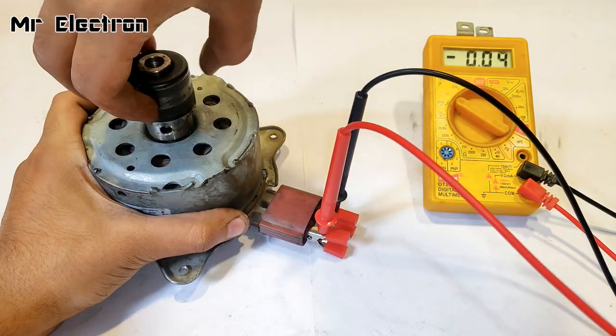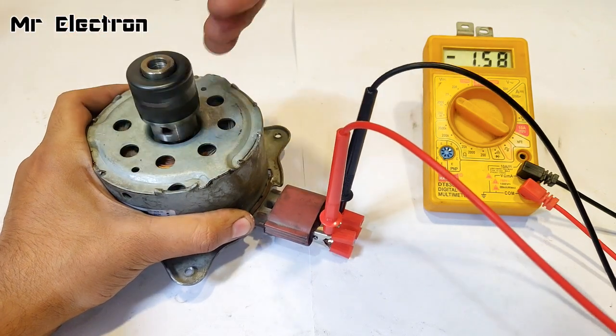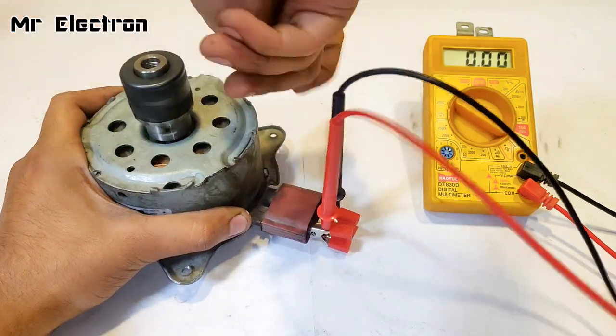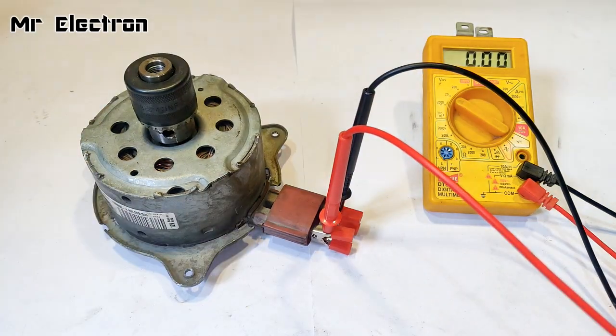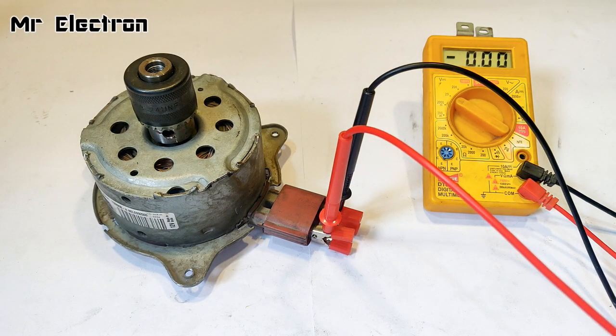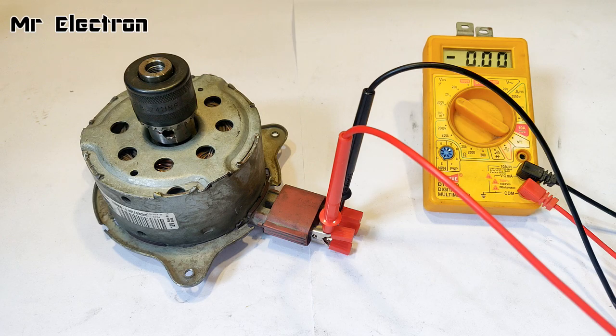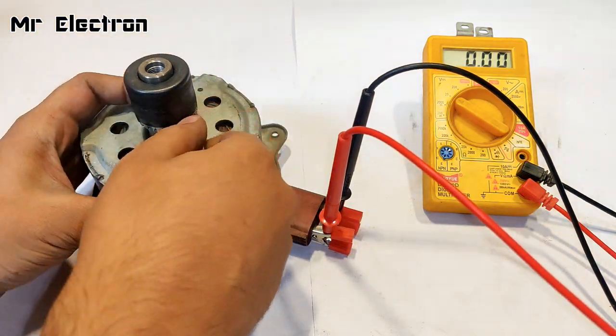See, 1.3 volts, 1.58, 1.45. So the hand rotation voltage was not much. Now comes the rope rotation. Let's round the thread on the drill chuck.